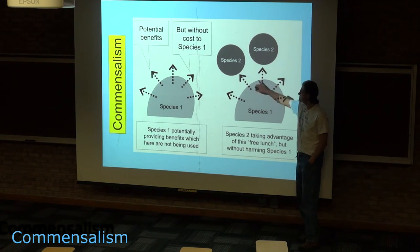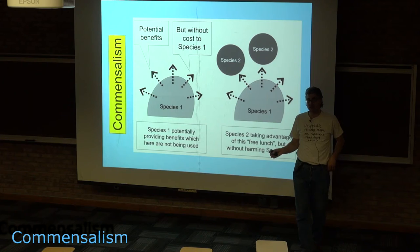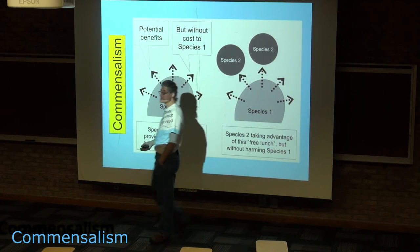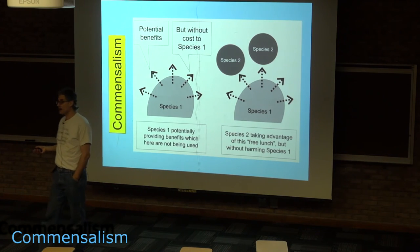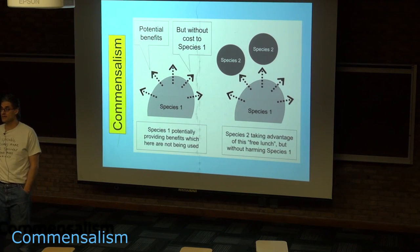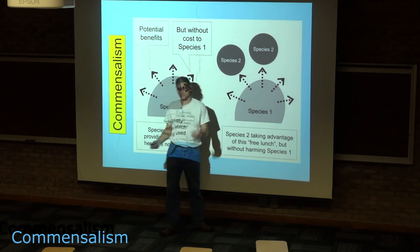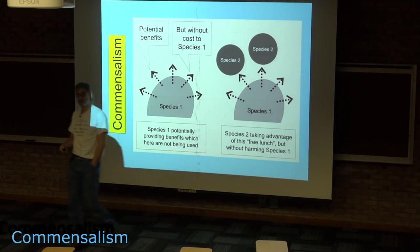So this is the first species giving off whatever this stuff is, and the second species taking advantage of it—whether it's resources, nutrients, energy, or a place to live. So long as this other species is neither hurting nor helping the first species, we describe it as a commensalistic relationship.